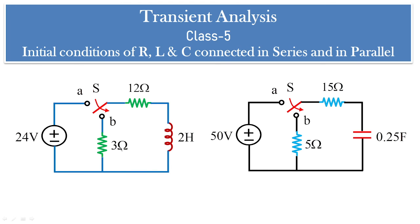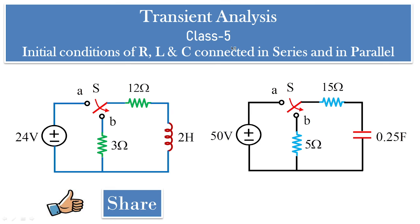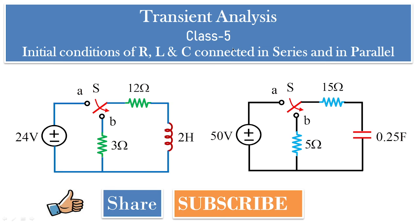This is how we treat problems with inductors and capacitors. As a practice exercise, replace the resistor with an inductor or capacitor and try to obtain the transient analysis for initial conditions of RLC circuits under series and parallel configurations. We'll see more numericals in class 6. I hope you liked this video — please share among your friends, subscribe to the channel, and press the bell icon for future notifications. Thank you.